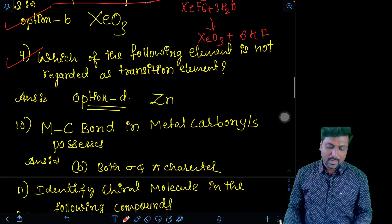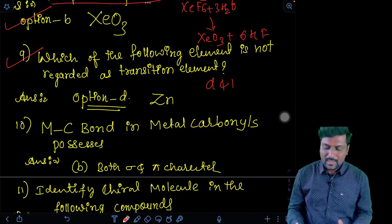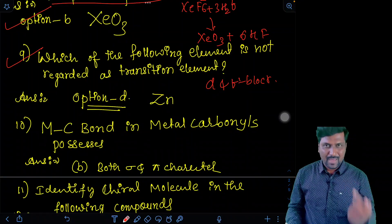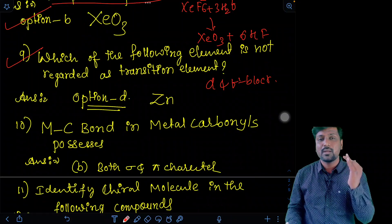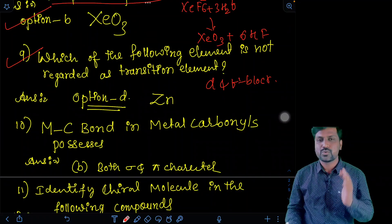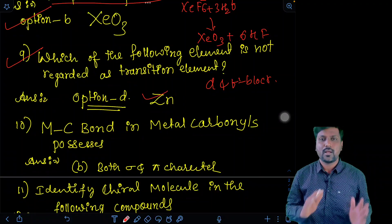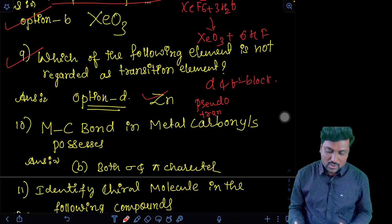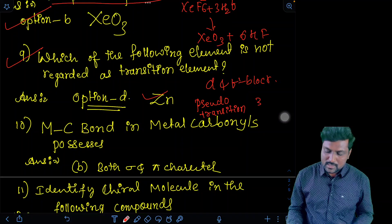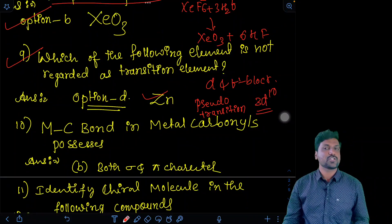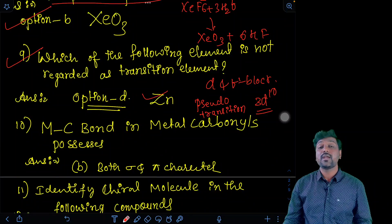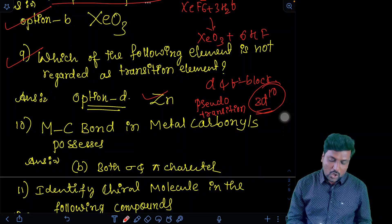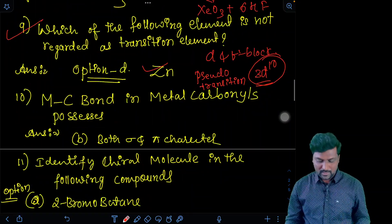Ninth question. Which of the following is not regarded as a transition element? This was purely d and f block element unit. See here, optionally, iron, scandium, manganese - they are having partially filled d orbitals. So that's why they are transition elements. But zinc is not a complete transition element. It is a pseudo transition element. Why? Because it has 3d10 electronic configuration. It does not contain partially filled d orbital. It contains 3d10 full filled d orbital. That's why it is not a transition element. It is a pseudo transition element. That is a direct question.